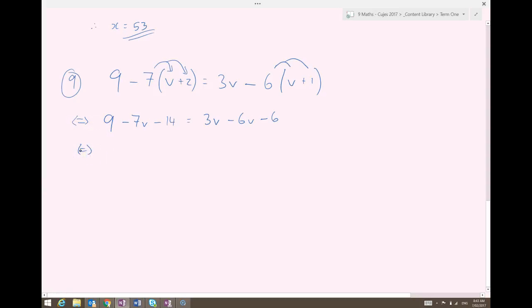Still stick with your one side and simplify that side. So in terms of v's, on the left-hand side, I have negative 7v. And then 9 minus 14, that's going to be negative 5. On the right-hand side, I've got 3v's. I'm going to need to take away 6 of them. So that leaves me with a shortage of 3, doesn't it? 3 minus 6. So that's negative 3v minus 6.